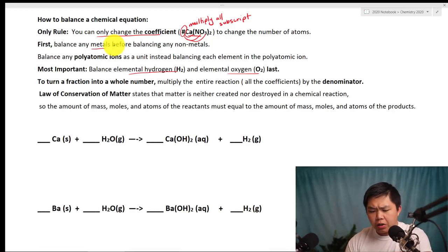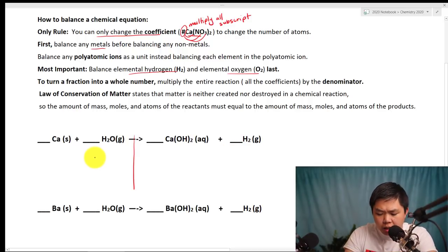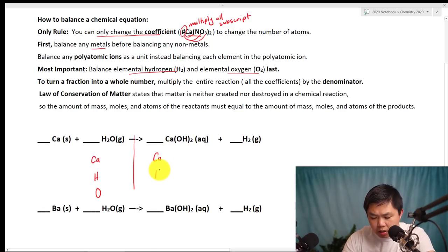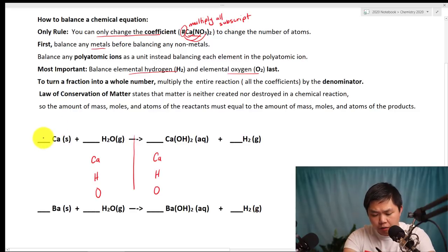The first thing we're going to do is divide the reactant from the product side, and we are going to make this list. So we have calcium, hydrogen, and oxygen on the reactant side, and the same list on the product side. Then we have to count how many we have, with the assumption that all the coefficients are going to be one.